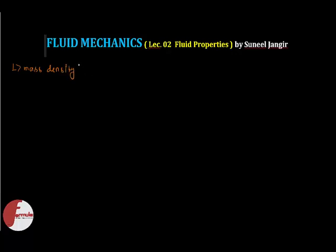Mass density is represented by rho. Mass density is normally also termed as density. Mathematically, density is equal to mass per unit volume. The units are kg divided by meter cube. Now let's look at the physical significance of this term.